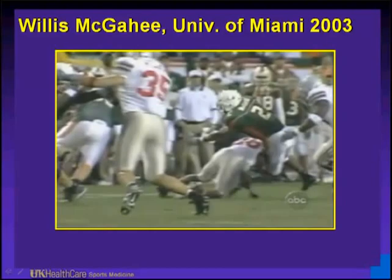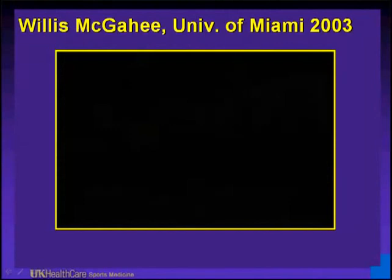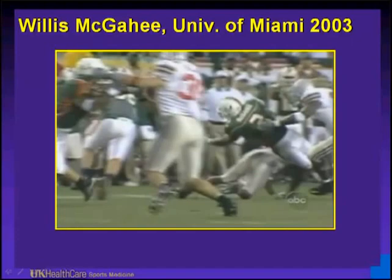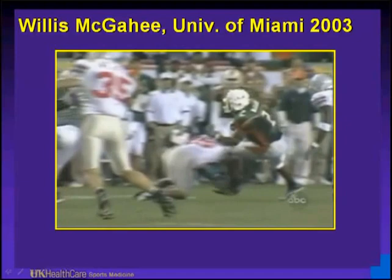This is a University of Miami running back hit from the front who goes into hyperextension — a similar mechanism — and had a knee dislocation. If you see some of these occur on the sidelines, you can get an indication of the severity of the injury. If the knee looks grossly deformed, there probably is a knee dislocation, and the structures that were torn should be identified. Most of them reduce spontaneously.